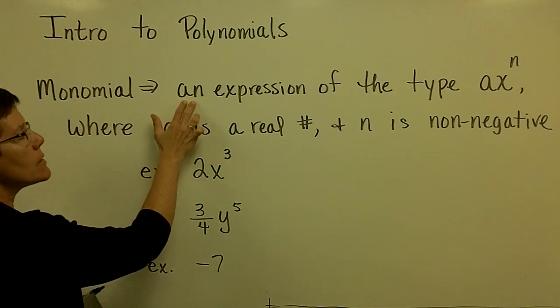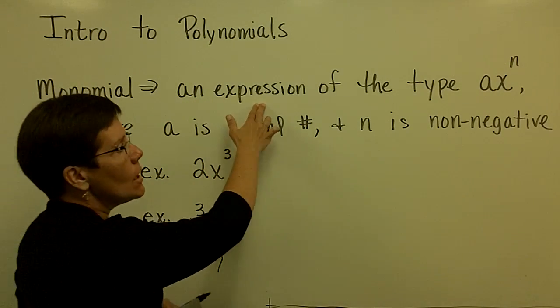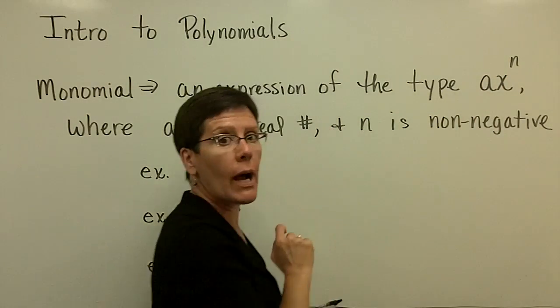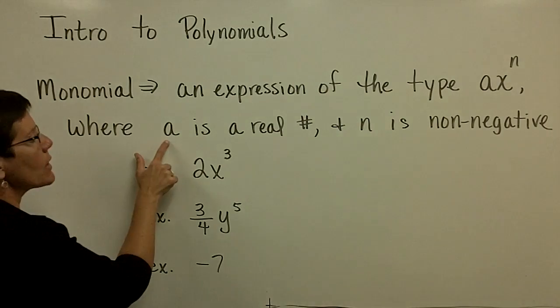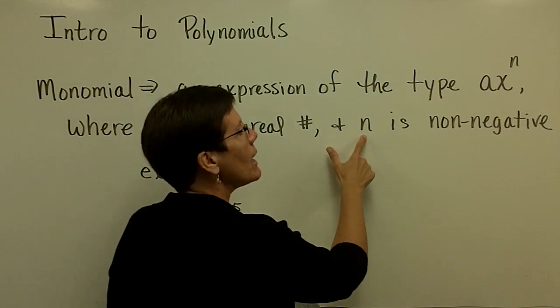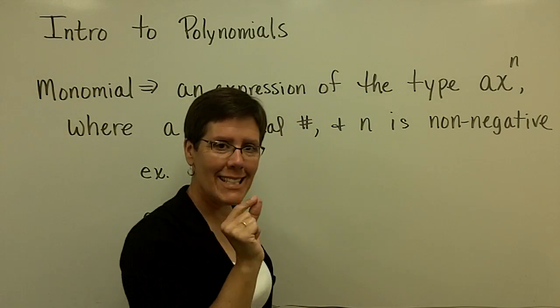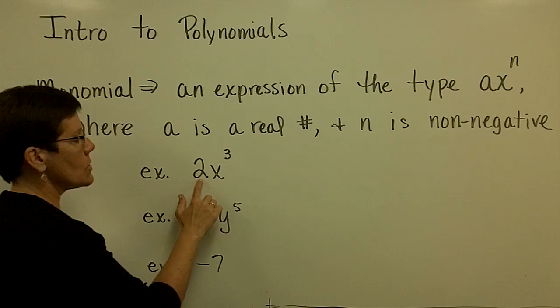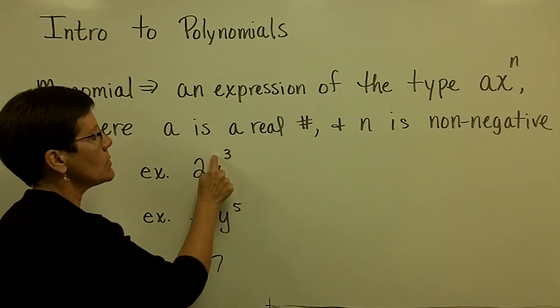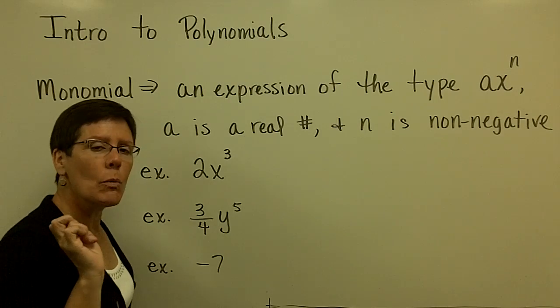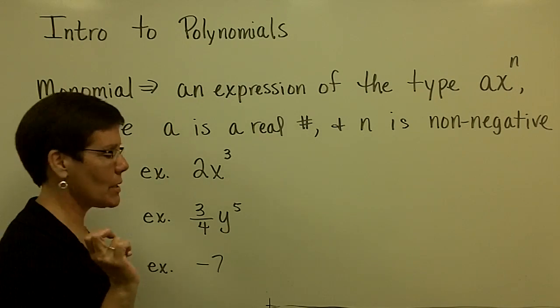A monomial is an algebraic expression of the type ax^n, where a is a real number and n is non-negative. It's always a positive value. An example of a monomial is 2x³. Notice the power here is a positive value. So the cool thing is that we won't be using any negative exponents.